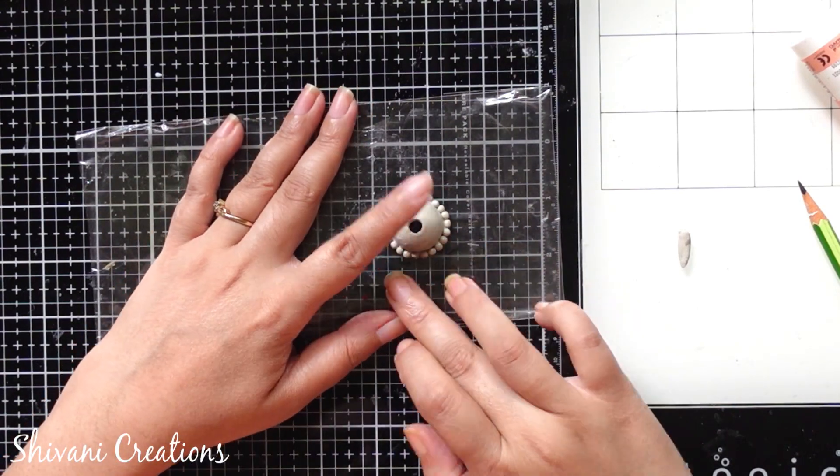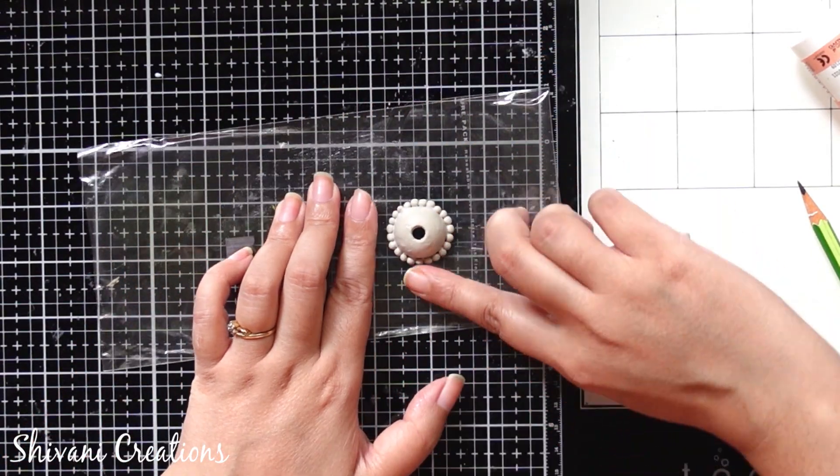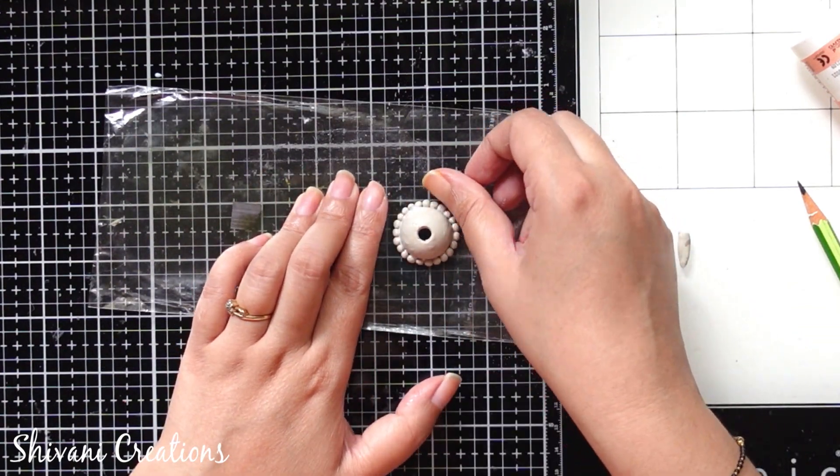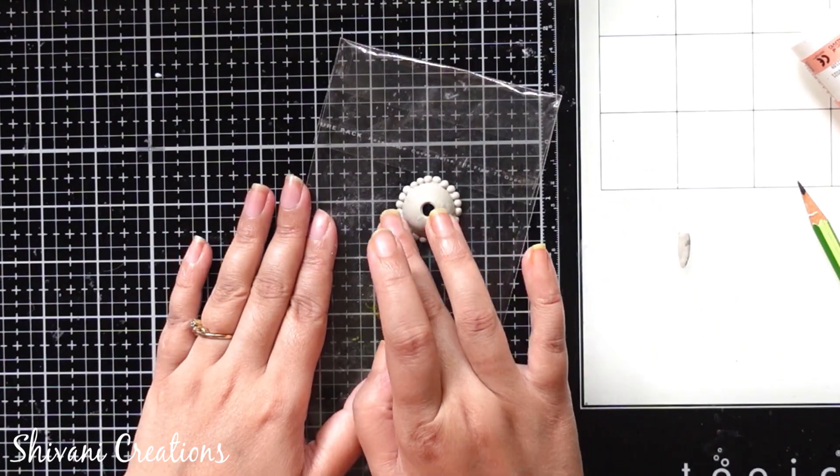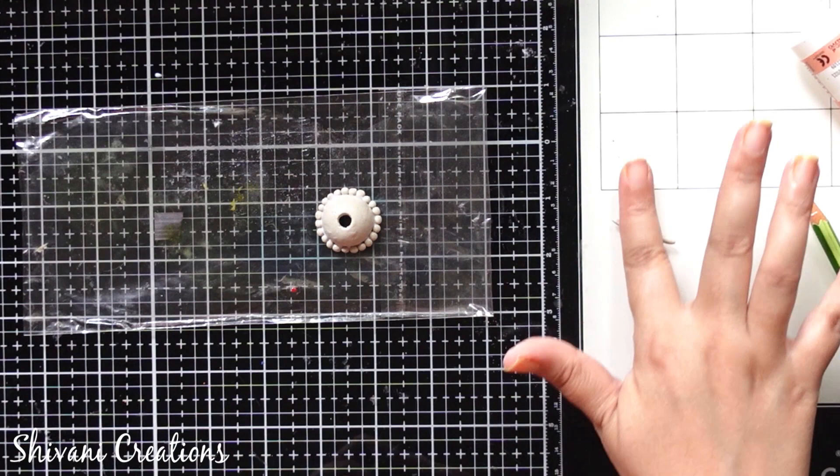Put it on the plastic surface and push all the balls towards the bottom side. Do it with very light hands. Now taking some more clay, rolling it on the surface.